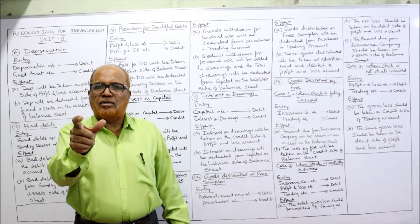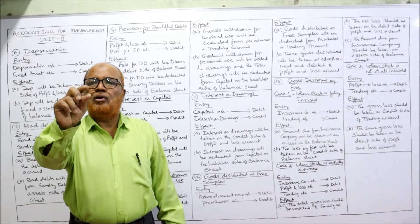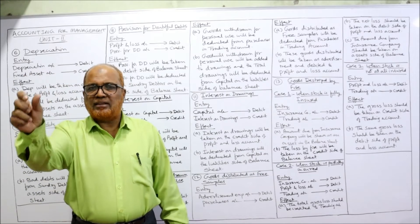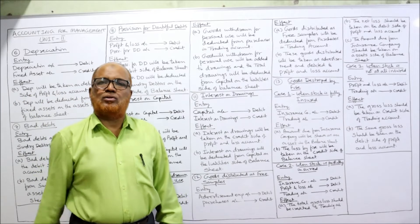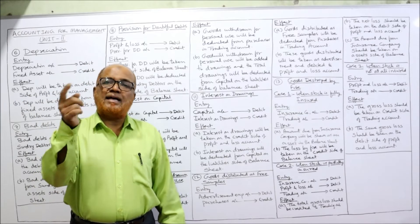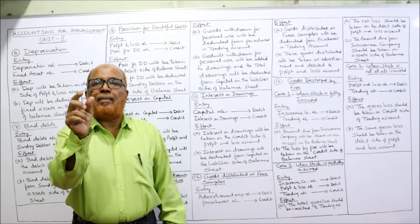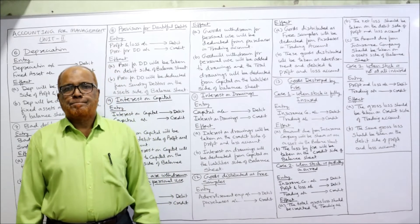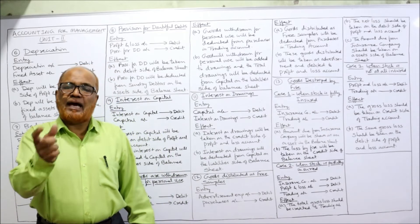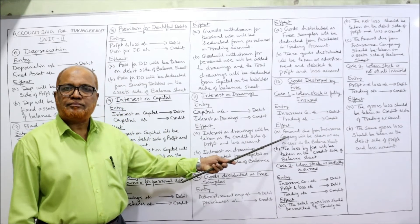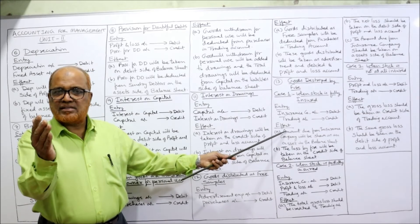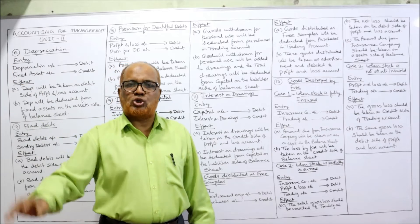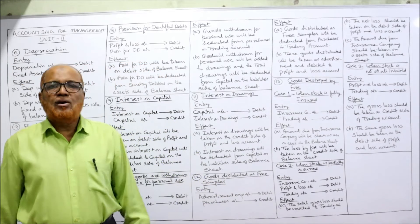When goods are fully insured, the entry is: Insurance Company Account debit, Trading Account credit. In the Trading Account on the credit side, write 'goods destroyed by fire — 10,000.' On the asset side of the balance sheet, write 'amount due from insurance company.' So: Trading Account credit side and asset side of the balance sheet — this applies when goods are 100% fully insured.